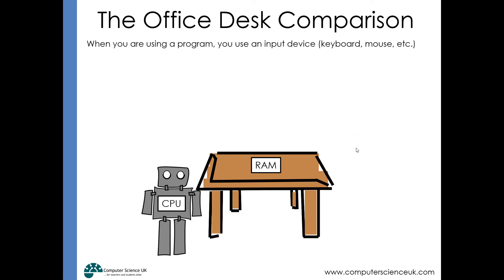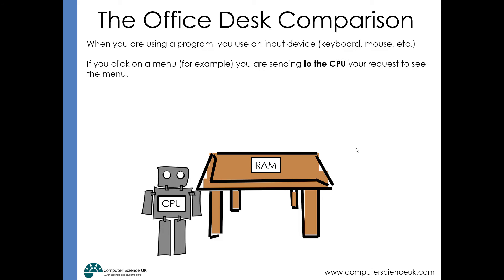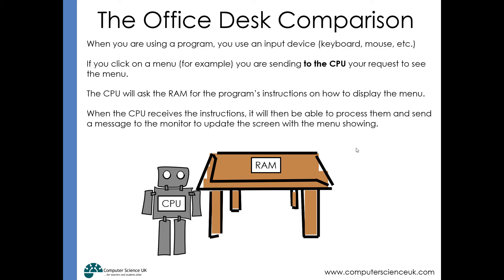When you're using a program, you use an input device such as a keyboard or mouse. If you click on a menu, you're sending a request to the CPU to display that menu. The CPU asks the RAM for the program's instructions on how to display it, processes them, and sends a message to the monitor to update the screen with the menu showing. Hopefully you now have a better understanding of how the CPU, hard drive, RAM, input devices, and output devices all work together when a program is running.